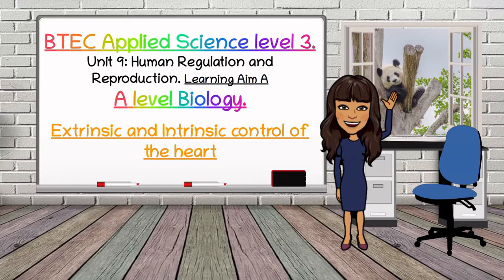Hi everyone and welcome to another video by BioTeach. This time I want to focus on the BTEC assignment unit 9, which is called human regulation and reproduction. There are three learning aims to this unit, and learning aim A looks at the interrelationship of the nervous control of the cardiovascular and respiratory system. This video is also relevant for A-level biology students, as I'm going to talk about the intrinsic and extrinsic control of the heartbeat — something covered in the second year of the course, specifically for AQA.